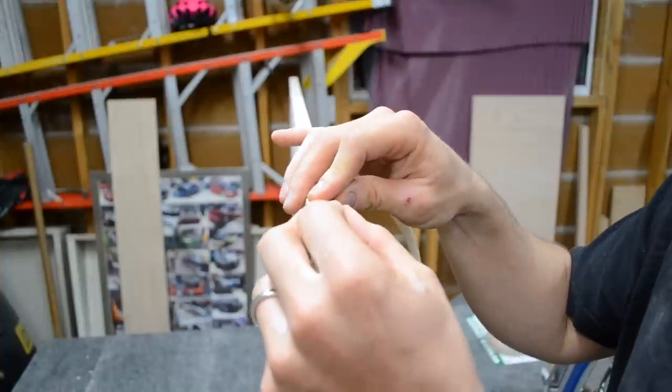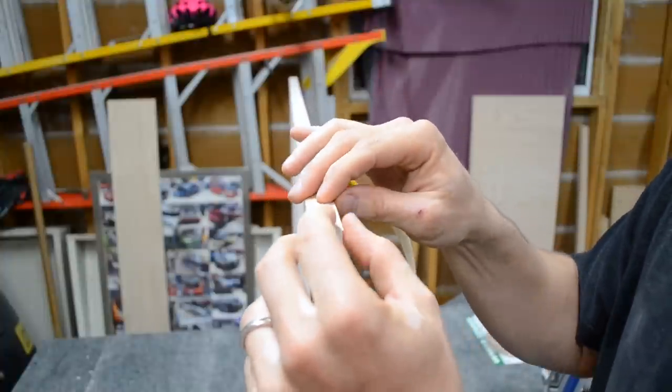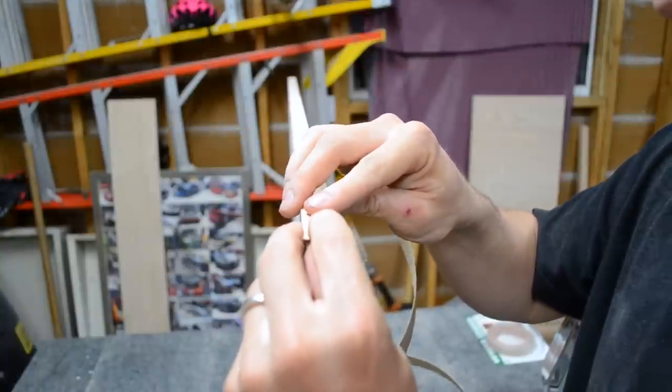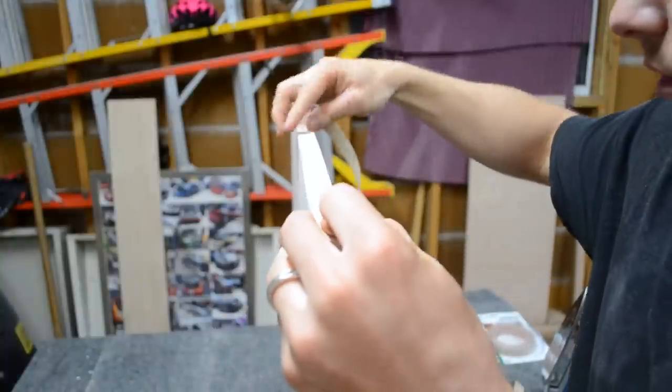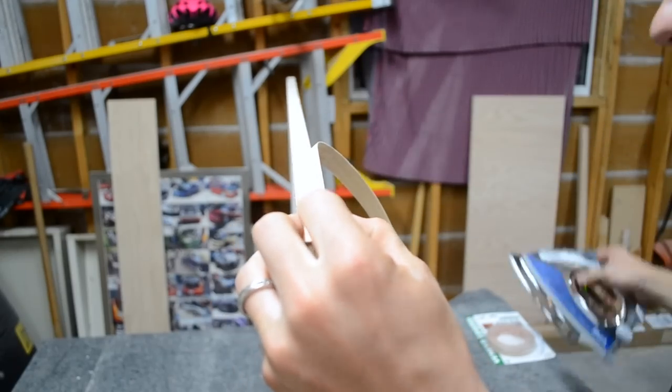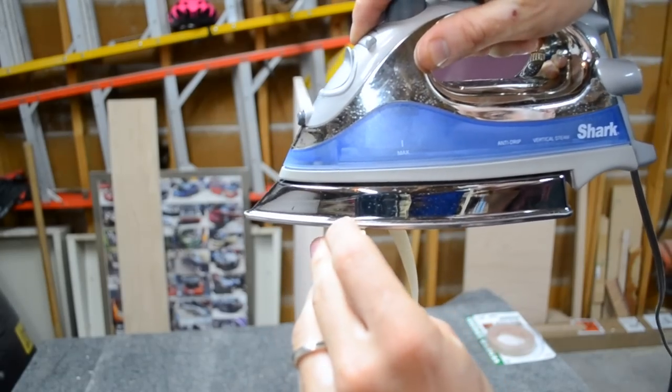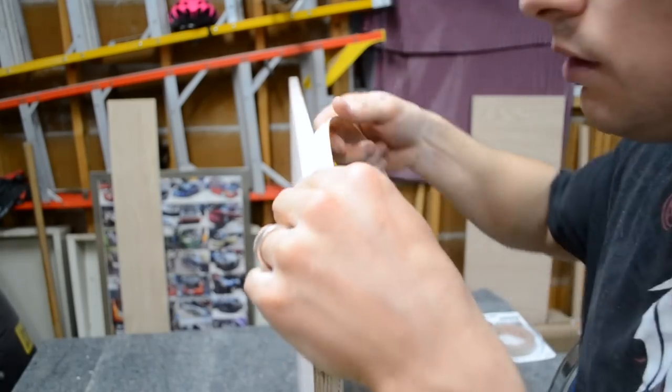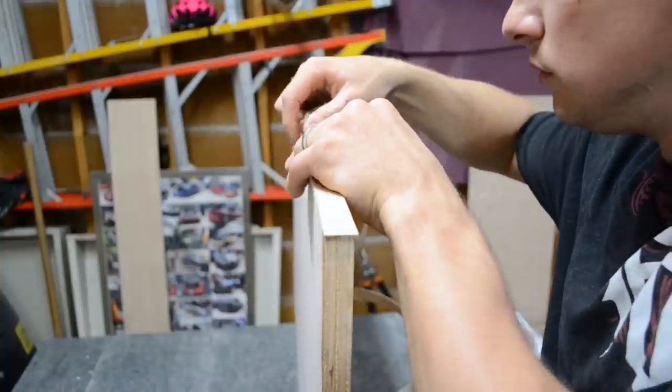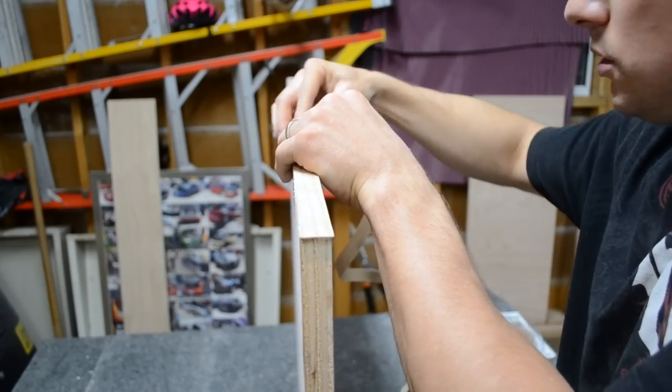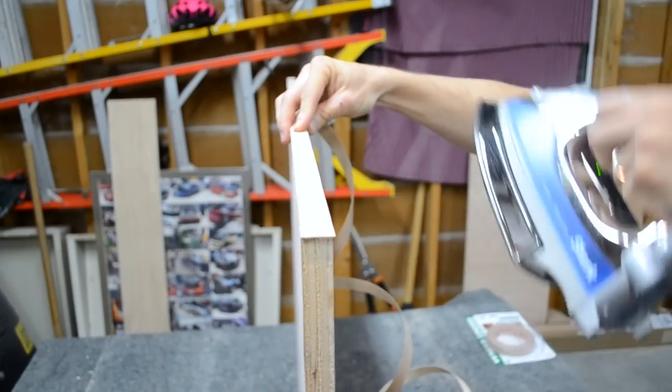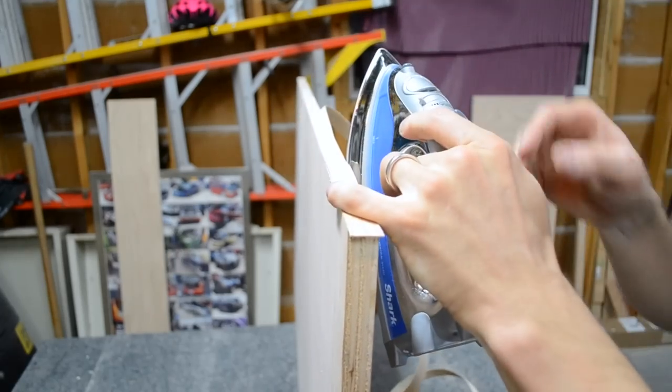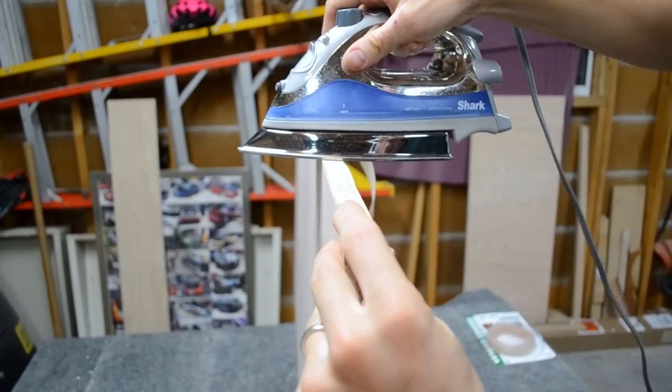Now that you have your iron set on the cotton setting and preheated, you can apply the veneer. You want to leave a little bit of an overhang just to make it easier on you. Once you get it started it becomes easier. What I like to do is stretch it out for a little section, give it a little heat just to hold it in place, then come back forward and work the front section and keep going back and forth.